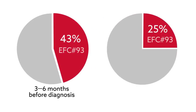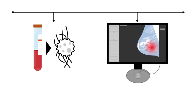In 25% of this group, it was found six to 12 months before diagnosis. These results suggest that even before a tumor is found, if EFC #93 methylation is present in blood samples, breast cancer has likely already developed and started to spread.